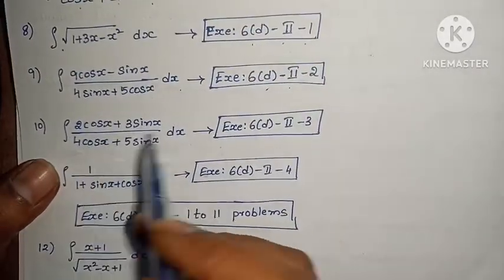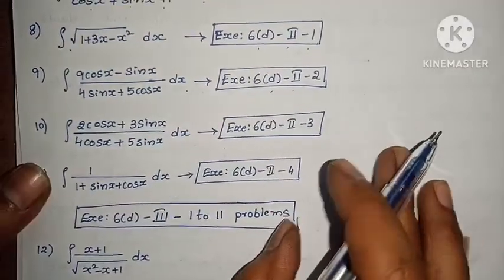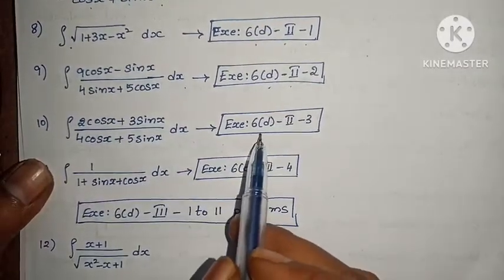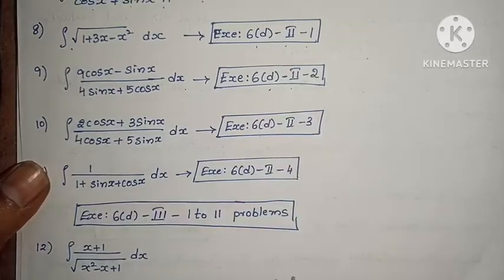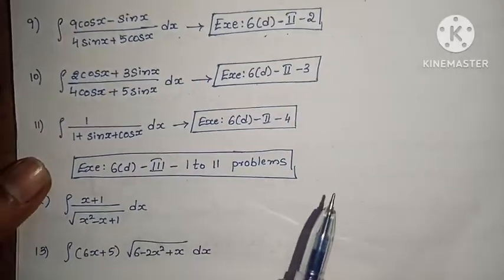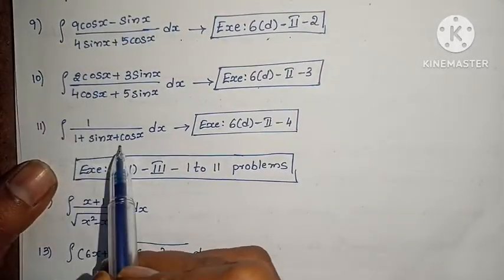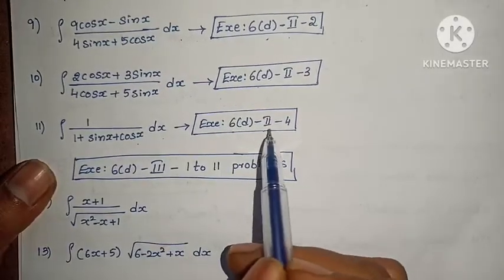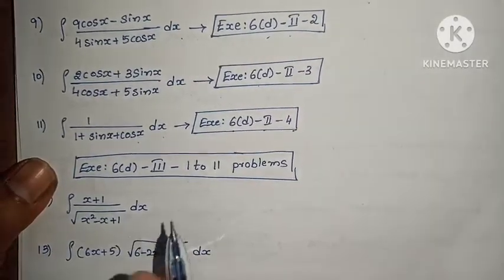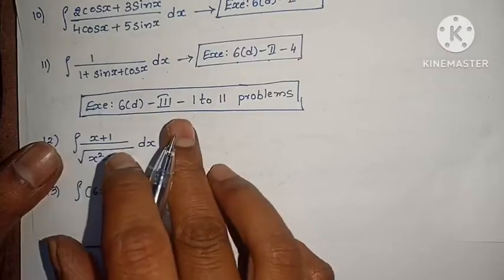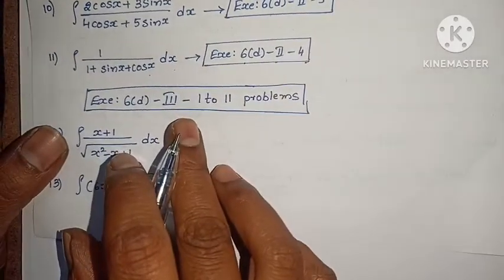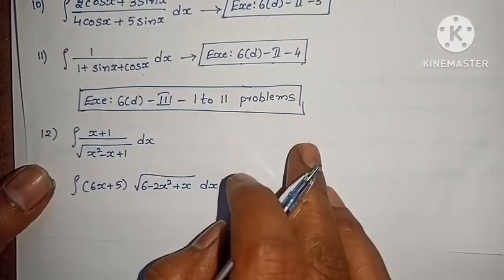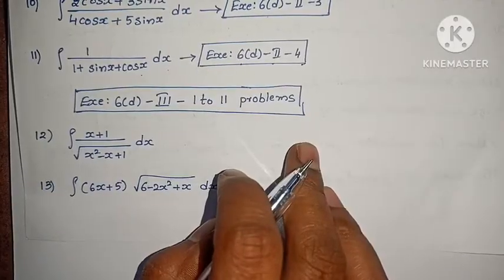Next: integral of (2 cos x + 3 sin x)/(4 cos x + 5 sin x) dx, exercise 6d, Roman numeral 2, 3rd problem. Next: integral of 1/(1 + sin x + cos x) dx, exercise 6d, Roman numeral 2, 4th problem. Also, exercise 6d, Roman numeral 3, 11th problem — many of these appear in previous question papers.